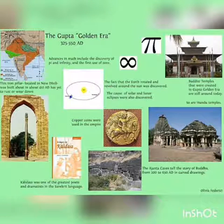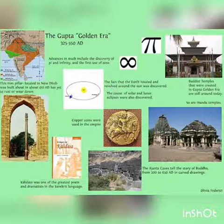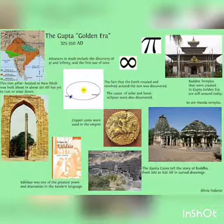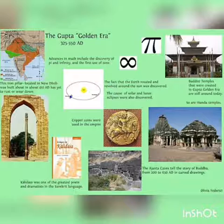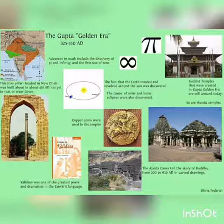The Gupta period is called the Golden Era because of advances in mathematics, including the discovery of pi and infinity, and the first use of zero. Their inscriptions and pillars are notable — the iron pillar located in Delhi was built around 410 AD and has yet to rust or wear. In the field of astronomy and science, the fact that the earth rotated and revolved around the sun was discovered, and the causes of solar and lunar eclipses were also discovered.